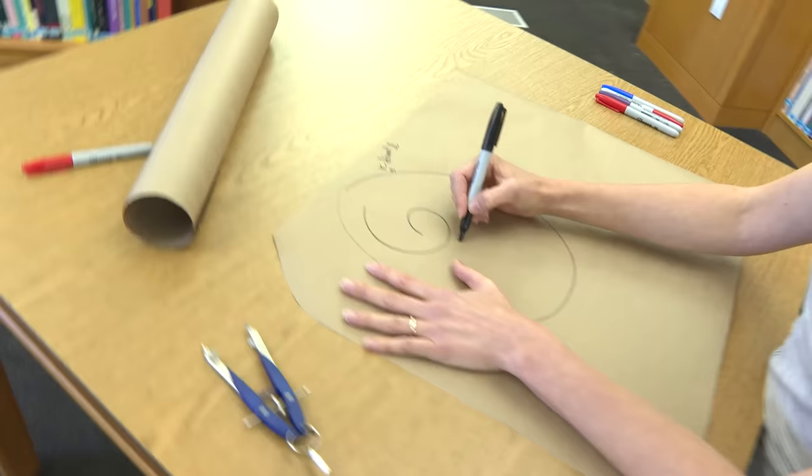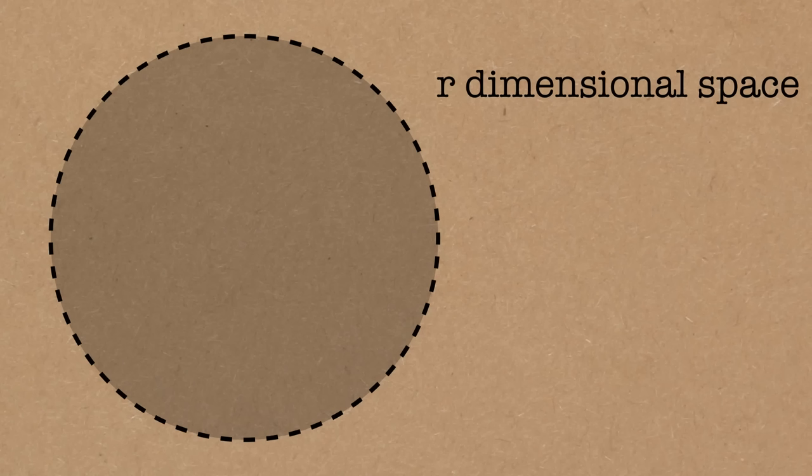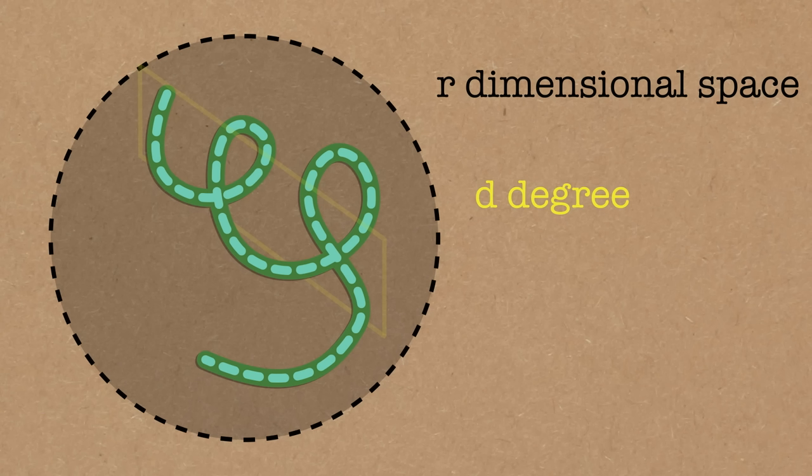And now I have a curve in this space. It's some amount twisty. Who knows how twisty it is? That's one measure of how complicated it is. And I can attach an invariant to measure how twisty it is, which is called the degree.